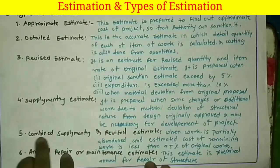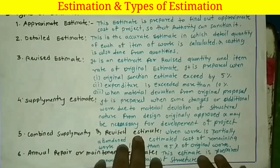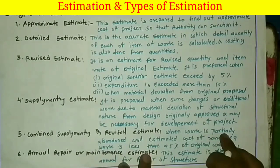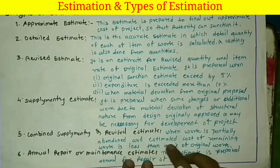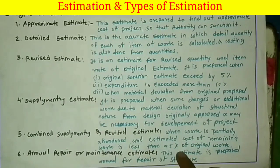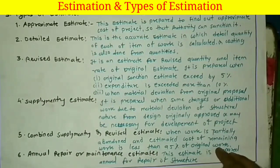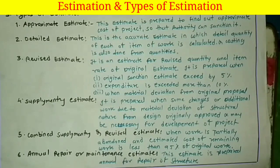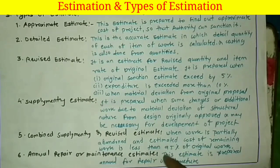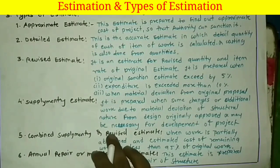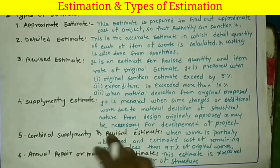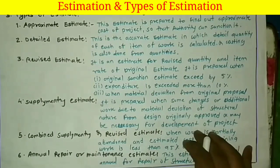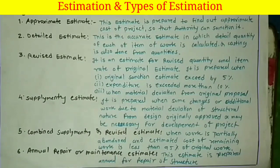The fifth type is the combined supplementary and revised estimate. It is prepared when work is partially abandoned and the estimated cost of the remaining work is less than 95% of the original cost. When the remaining work is less than 95%, you can prepare both the combined and revised estimate. However, if the remaining work is more than 95%, you are not able to prepare a combined supplementary and revised estimate.